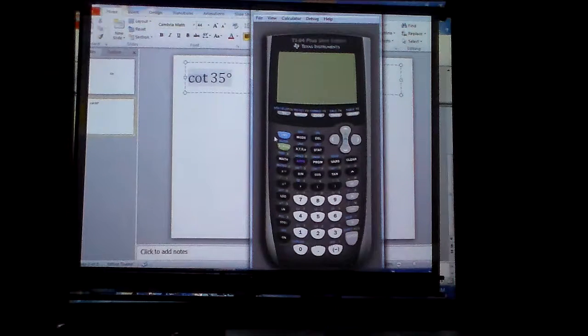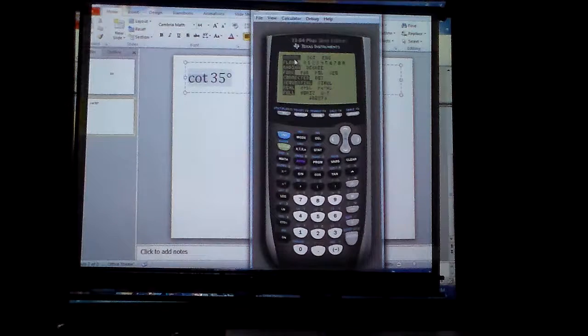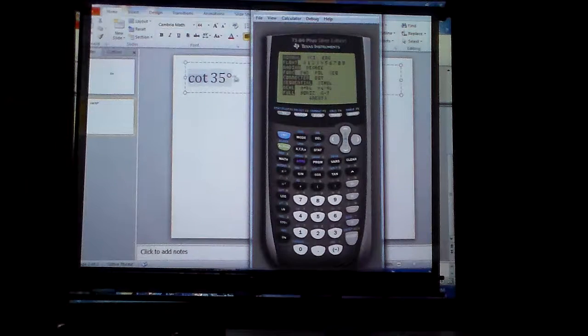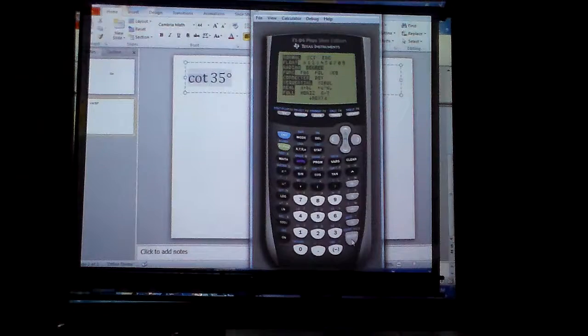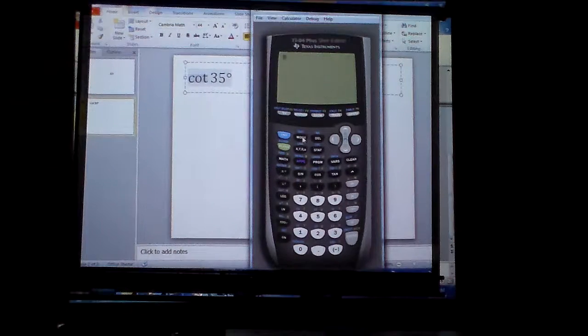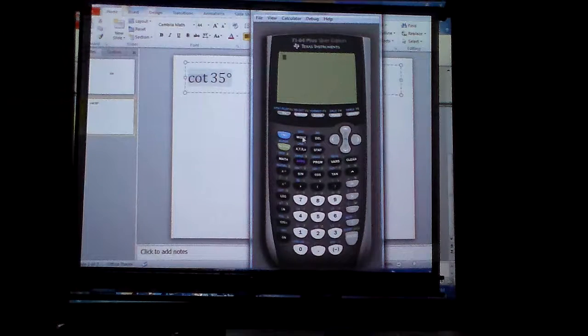Go to your calculator, make sure it's on, and go to mode. Whoops, it's in radians. You need to make sure that it is in degrees. You're going to arrow down, click over. Now I can go to second mode to get out. I had to make sure it was in degrees, otherwise I'm not going to get the right answer.